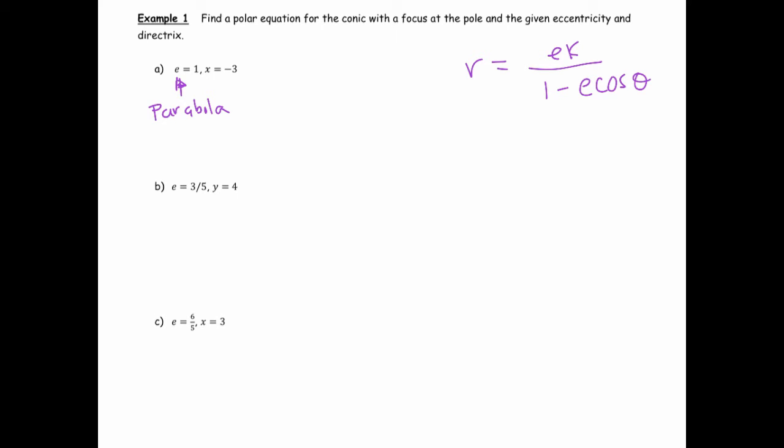We know that e is 1, and we know that k is going to be 3. So this is going to be 1 times 3 divided by 1 minus 1 cosine theta, which we could simply write as 3 over 1 minus cosine theta.